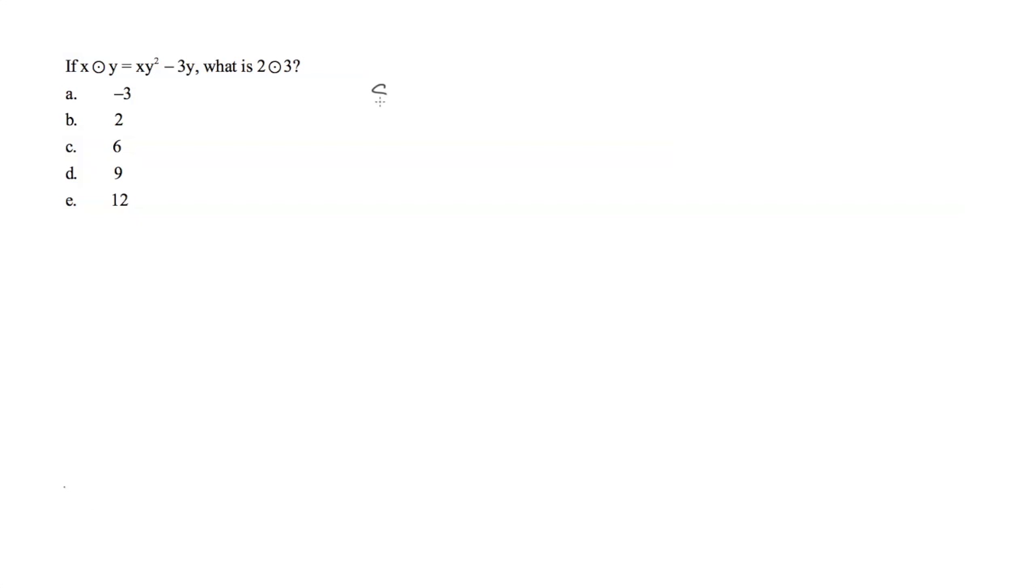They're just called special function questions but we treat them the same way as we do our normal f of x equals function. So when we have this circle with the dot, or I'll continue to call it bullseye, the number that comes in front of it will be your x value, the number that follows the symbol will be y.